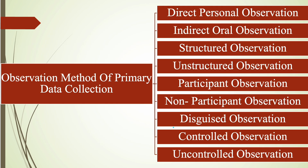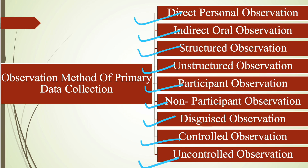The classification of the observation method of primary data collection includes: direct personal observation, indirect oral observation, structured observation, unstructured observation, participant observation, non-participant observation, disguised observation, controlled observation, and uncontrolled observation. These are the different types of data collection methods under the observation method.